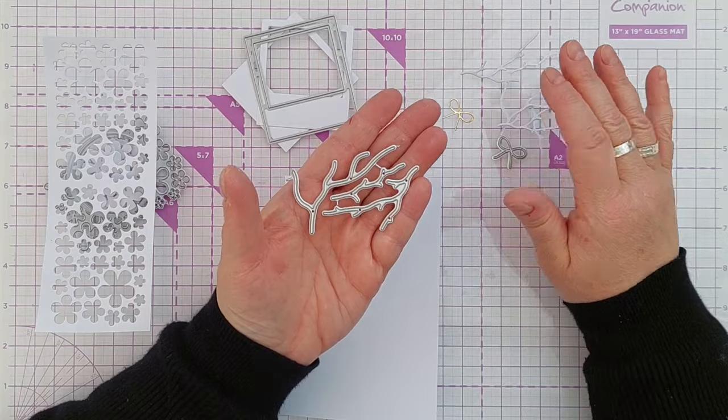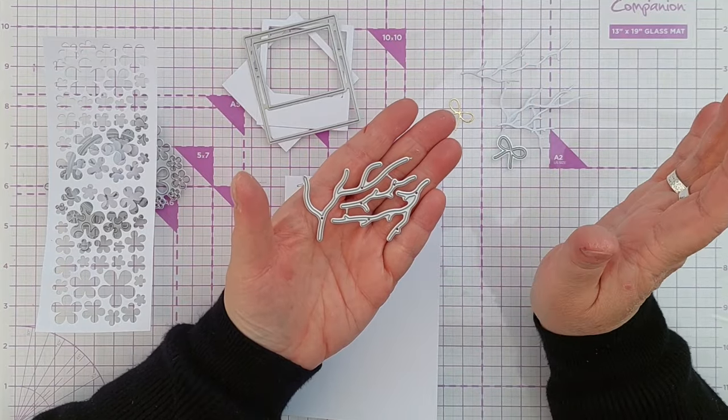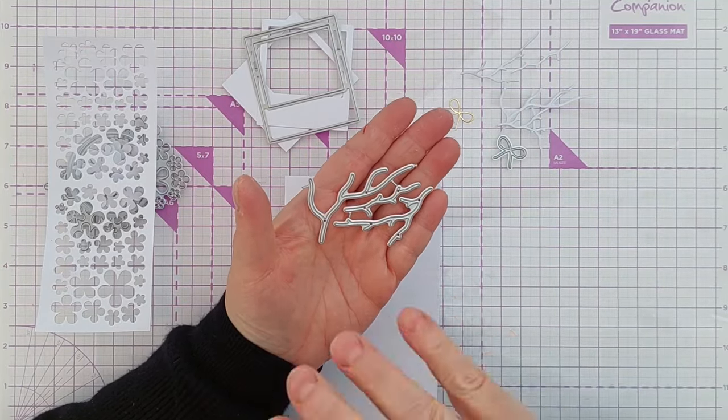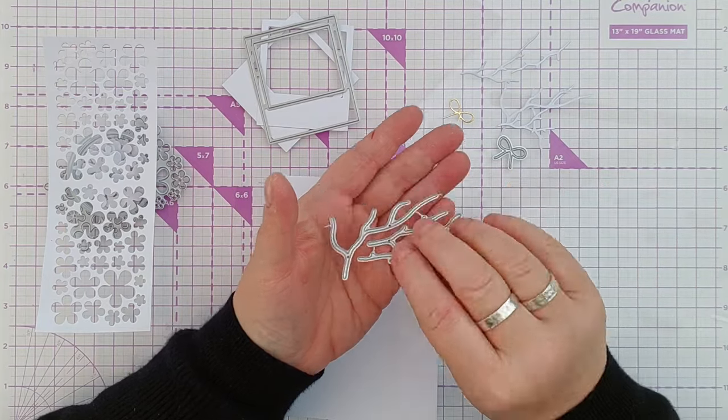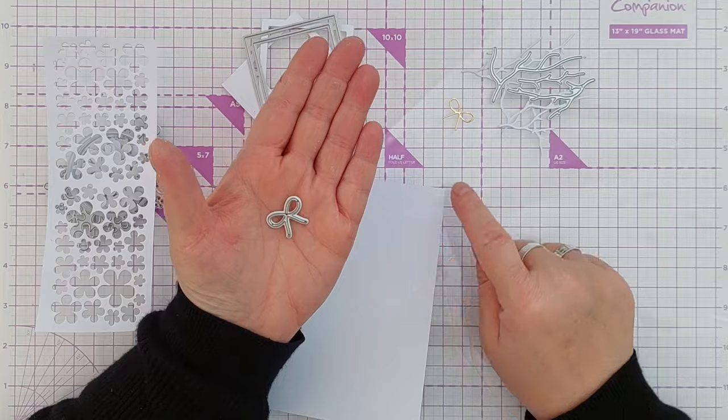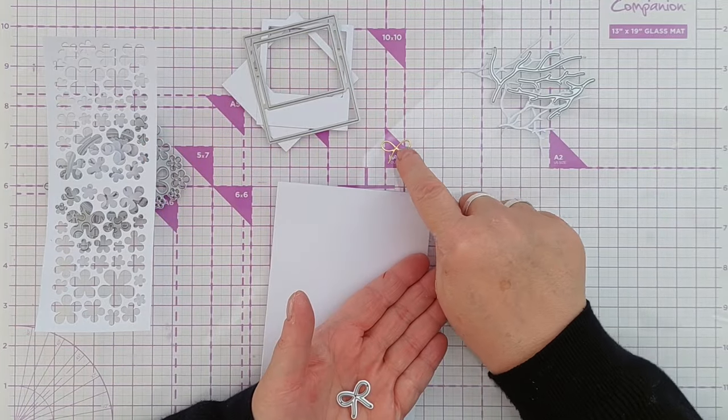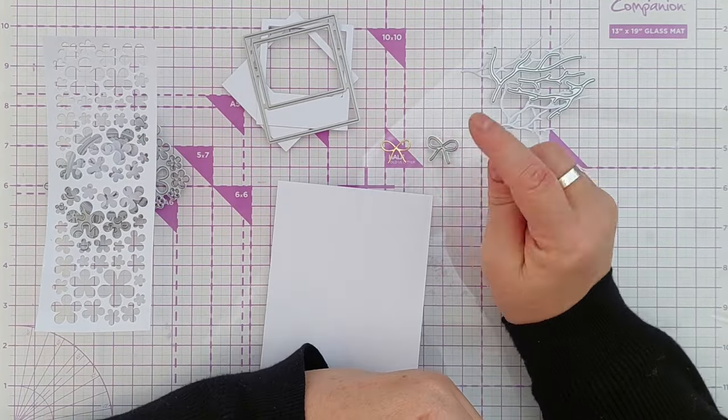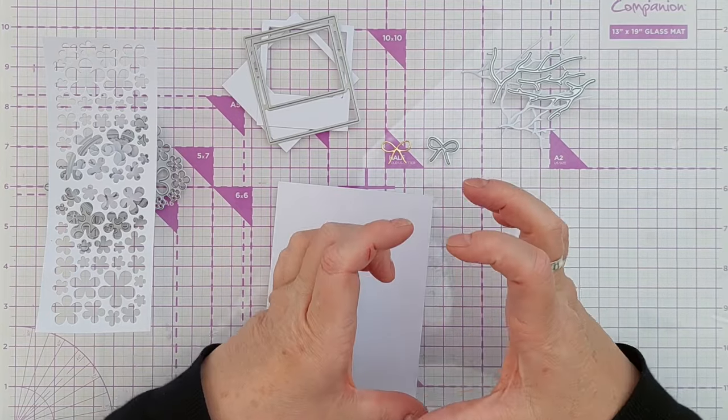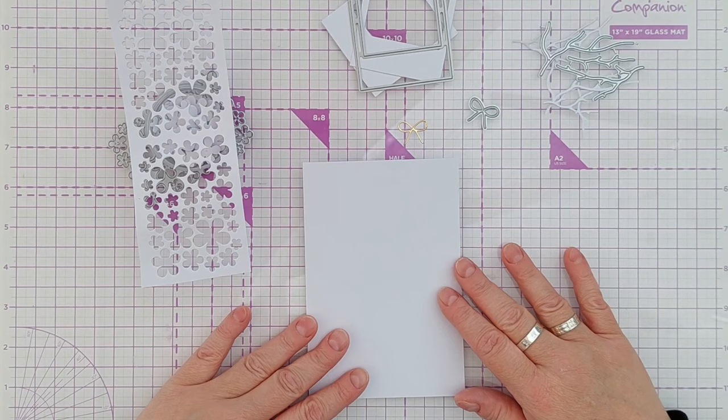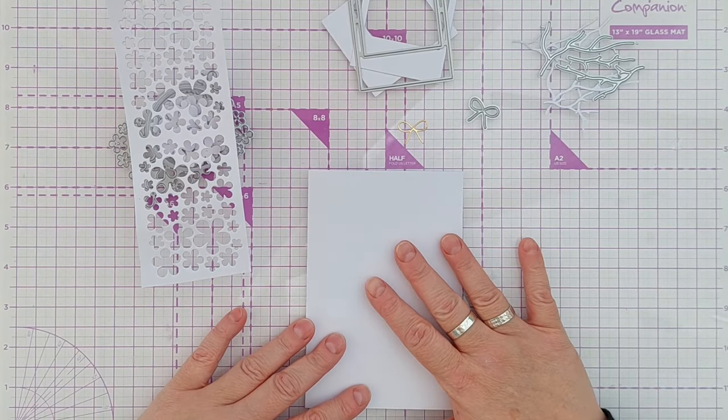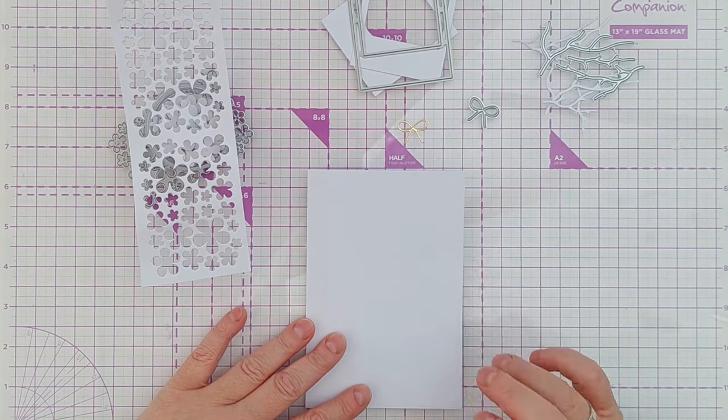These are branch dies from an Amazon purchase. It was a die set with vases and branches and little flowers for kind of Japanese style flower arranging. And then this little bow which cuts ever such a thin delicate bow, that came from an Etsy shop too in a set of bows. So these are the die cuts that I'm going to bring together today, and my card blank is four by six inches.